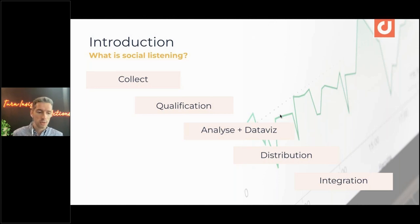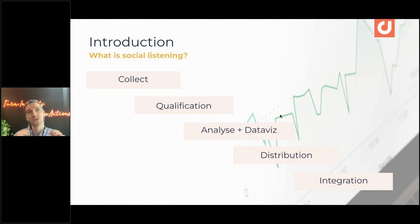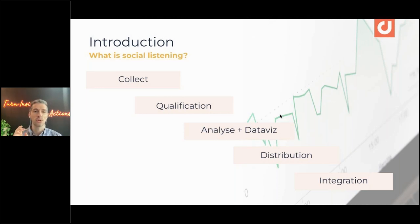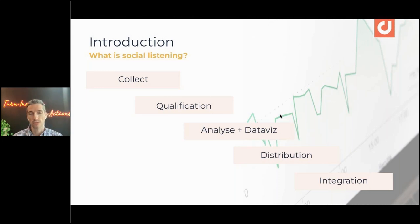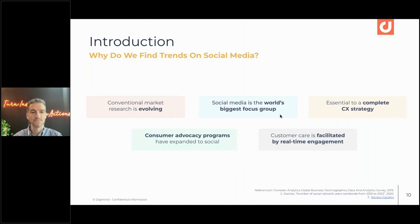The last pillar is integration, which we often forget. We live in a space with more and more integration between systems. A good social listening platform should integrate into your data warehouse, BI dashboards, or internal network — wherever you look at KPIs on a regular basis. So those five pillars are extremely important: collection, qualification, analysis, distribution, and integration.